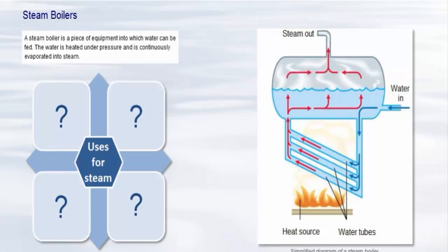A steam boiler is a piece of equipment into which water can be fed. The water is heated under pressure and is continuously evaporated into steam. Steam is an excellent medium for the supply of heat and can easily be piped to the required point of use. Click on the question marks for some examples of typical uses for steam.